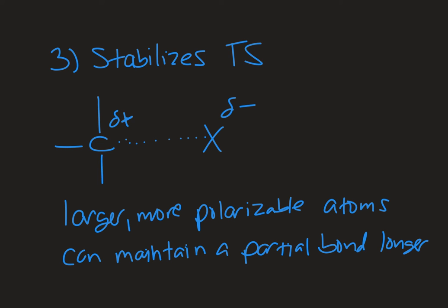The last factor we'll look at is one that stabilizes the transition state. The transition state is the structure in between when a bond is formed or broken — it's not a reactant, product, or intermediate we can isolate; it's the structure as bonds are forming and breaking. A leaving group that can help stabilize that by minimizing charge is going to make for a better leaving group and a more reactive species. The larger X is, the more polarizable it is, so it essentially keeps a partial bond to the carbon atom it's leaving from for longer, lowering the energy of the transition state.